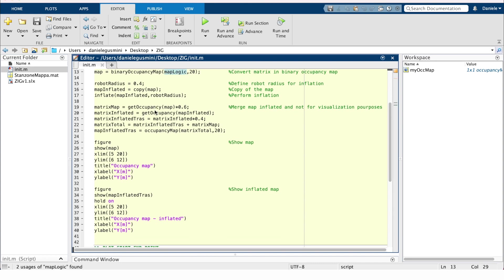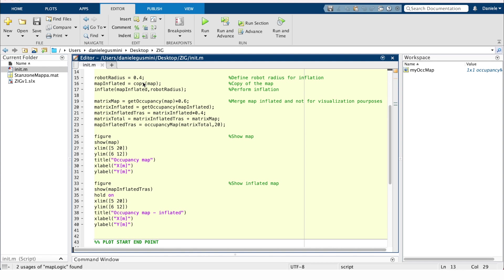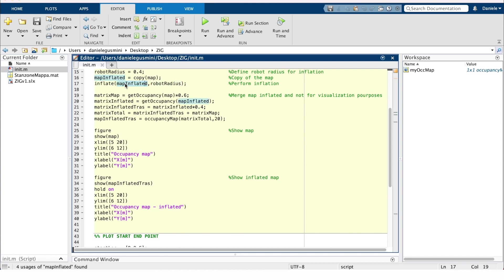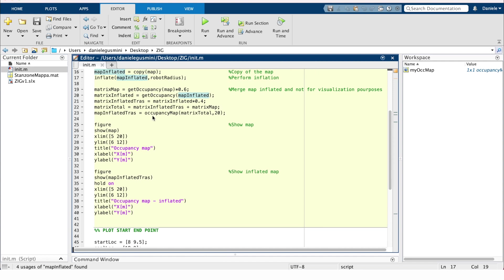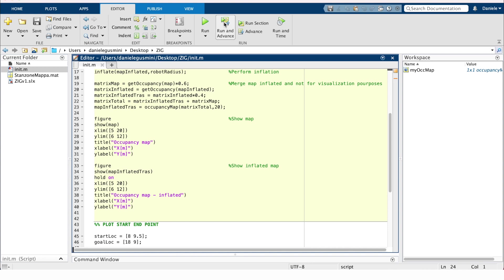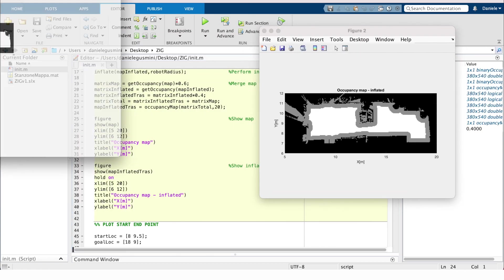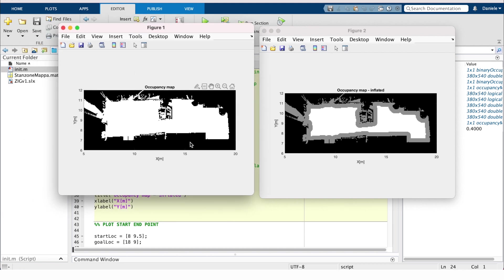Now we define the robot radius for the inflation process and copy the starting map into a new map inflated object. Through this command, inflate of map inflated and robot radius, we perform the inflation of the map to achieve the correct response. These steps merge the two information and plot the two maps, one above the other. So we can see by running the section, we have two different figures. This is the starting binary occupancy map. This is the second that is inflated. In fact, if you can see, the gray zone is the inflation zone, the difference between the two.